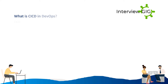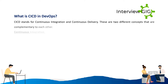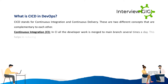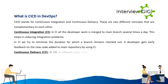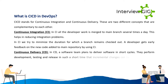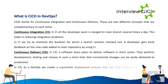CI/CD stands for continuous integration and continuous delivery — two complementary concepts. In continuous integration, developer work is merged to the main branch several times a day, reducing integration problems and minimizing the duration a branch remains checked out. Developers get early feedback on new code. In continuous delivery, a software team delivers software in short cycles, performing development, testing, and release incrementally. As a DevOps engineer, we create a repeatable deployment process that achieves the objective of continuous delivery.